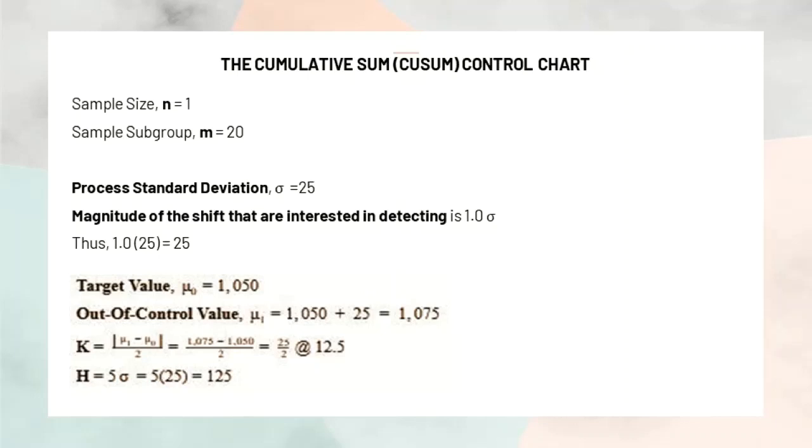After that, k and h values need to be defined with the formula absolute mu1 minus mu0 divided by 2 for k and use 5 sigma formula for h. Thus, we got 12.5 and 125 respectively for k and h values.